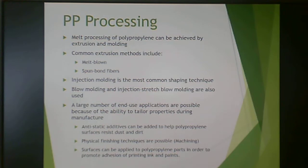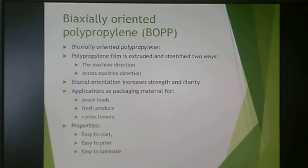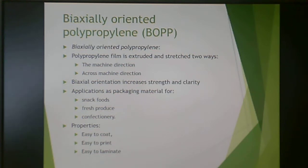You can enhance surfaces to put printing inks and other things on top to decorate it. Also, you can biaxially orient polypropylene into BOPP — biaxially oriented polypropylene — by extruding and stretching the polypropylene in two directions: the machine direction, parallel to the way it's coming out of the machine, and the cross direction, perpendicular.